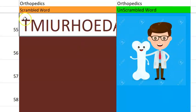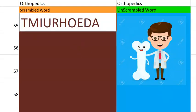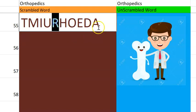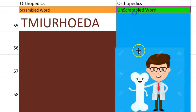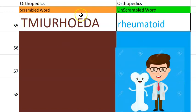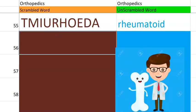Let's go to the 55th one. Starts with R — autoimmune arthritis. RA, rheumatoid arthritis.